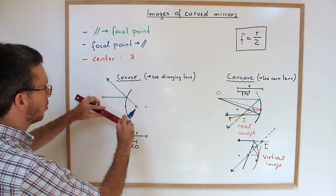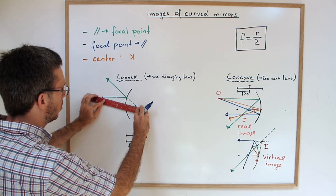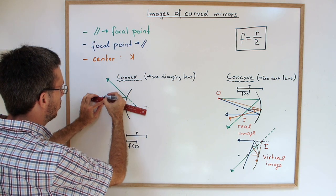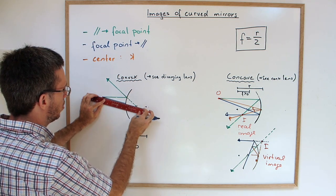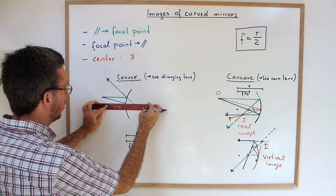One that is aimed at the focal point should become parallel to the central axis.